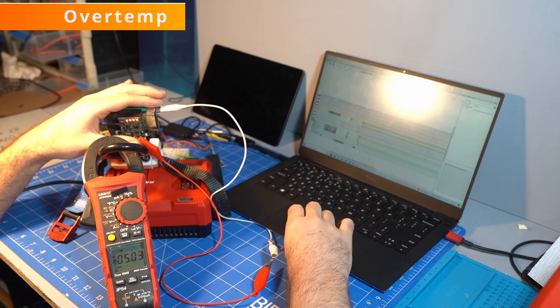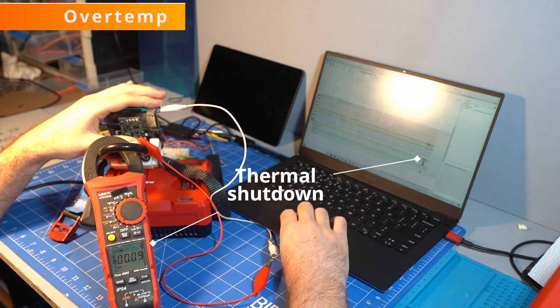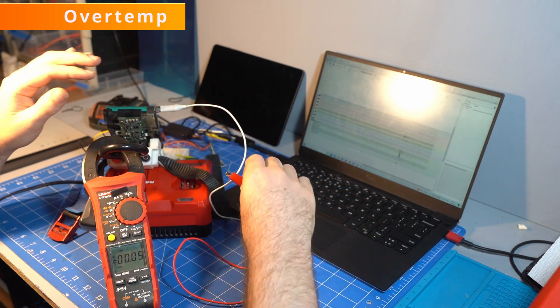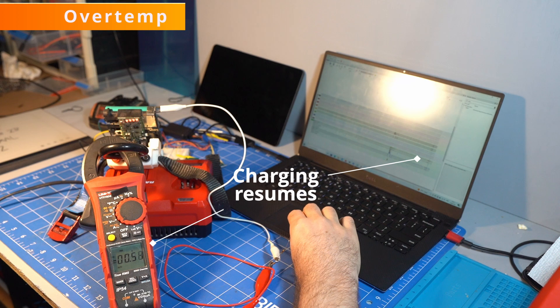Overtemp test is done by shorting the thermistor with a 4.7 kiloohm resistor, and that tricks it into thinking it's overheated. The data shows the status byte is now 4. Removing the resistor switches the state from 4 to 9, so I think 9 means ready to charge.